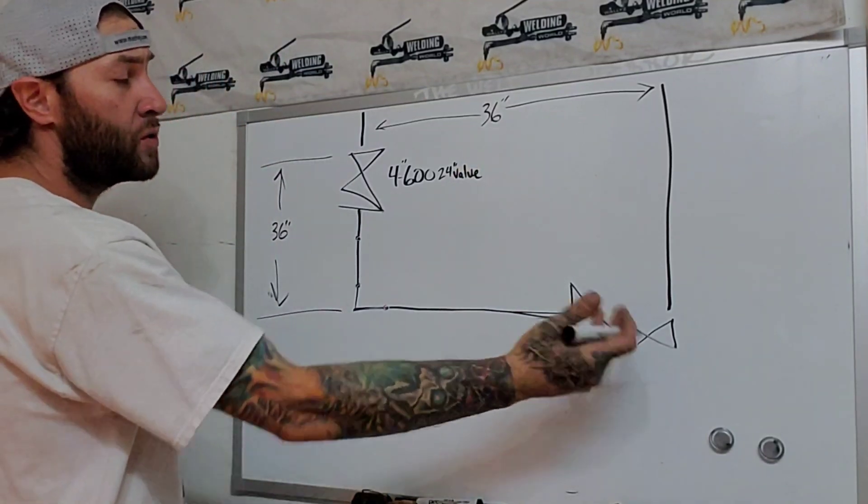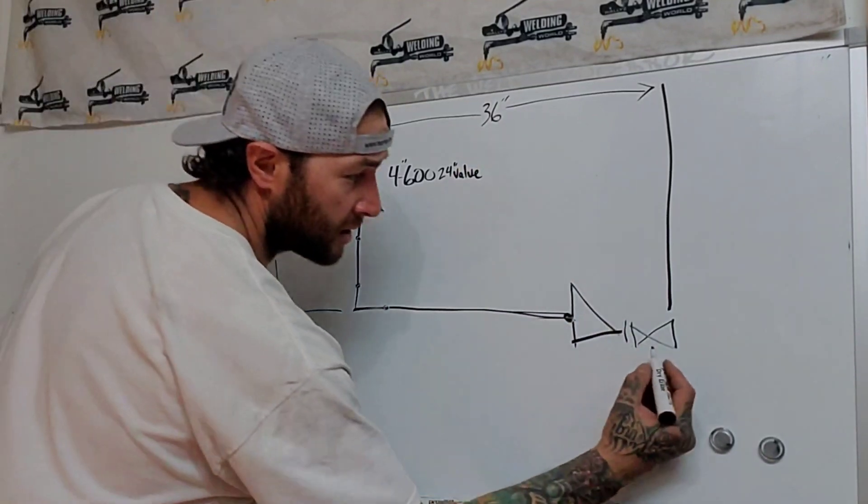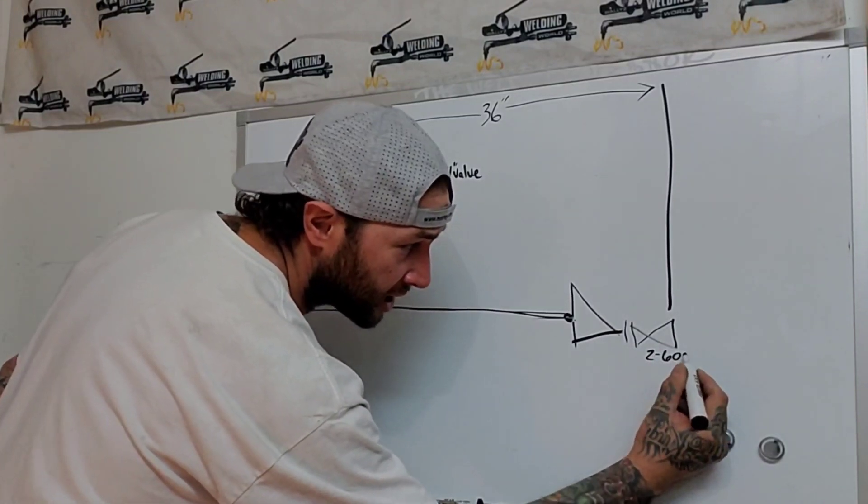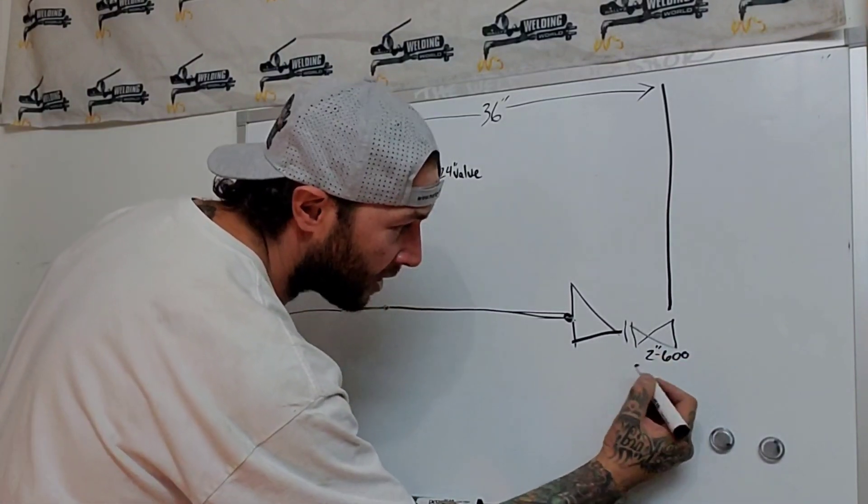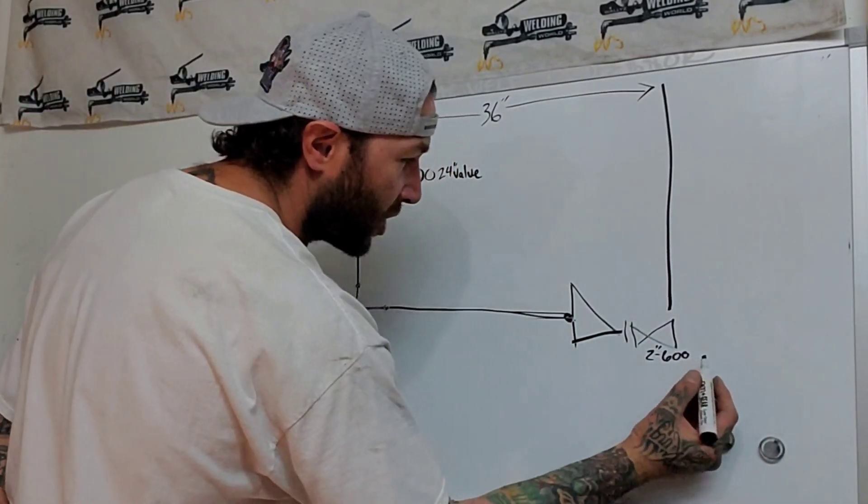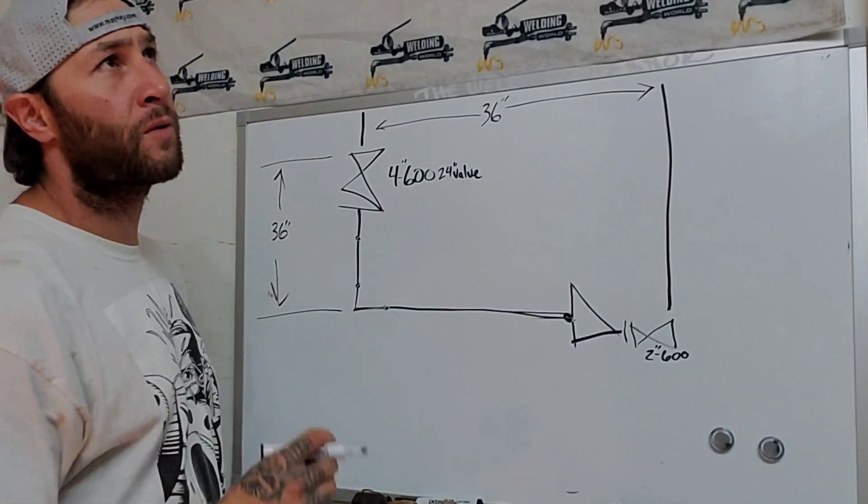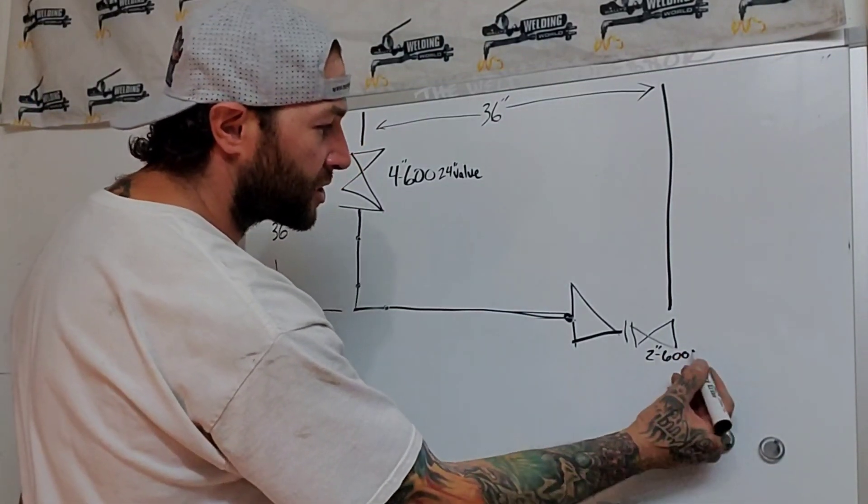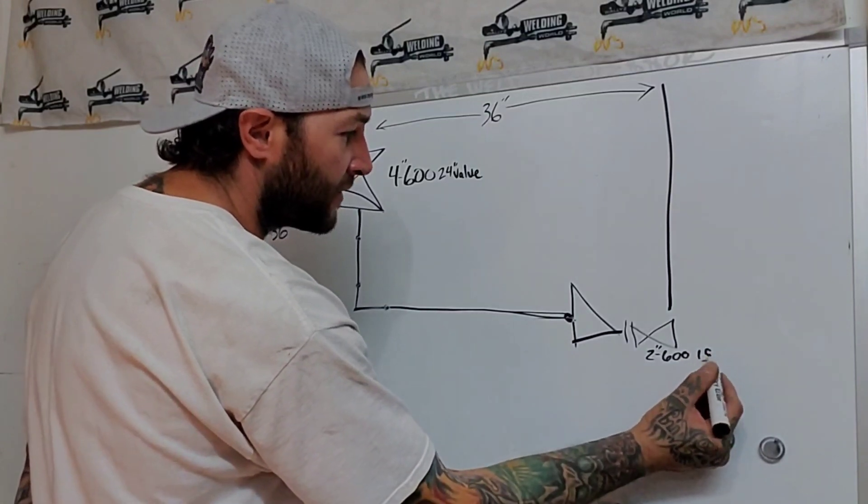Now we have a 2-inch valve down here, and let's call this a 2-inch, because we reduced down, let's call this a 2-inch, 600-pound flange, I mean valve, and let's just give it a number. Like I said, I'm not sure what the number is in the book off the top of my head, because I'm not really familiar with most valves off the top of my head. But we can go ahead and say that the 2-inch, 600-pound valve is probably 15 inches.